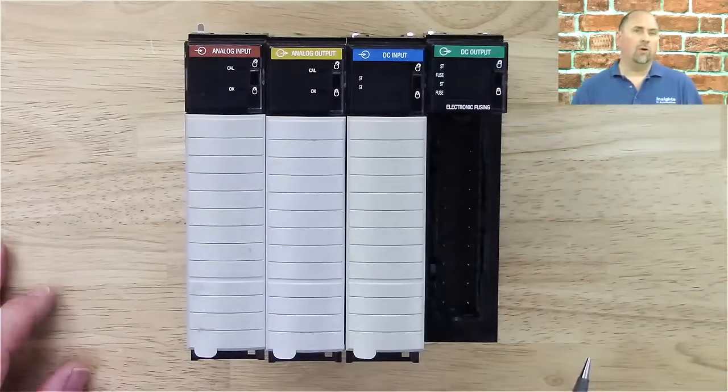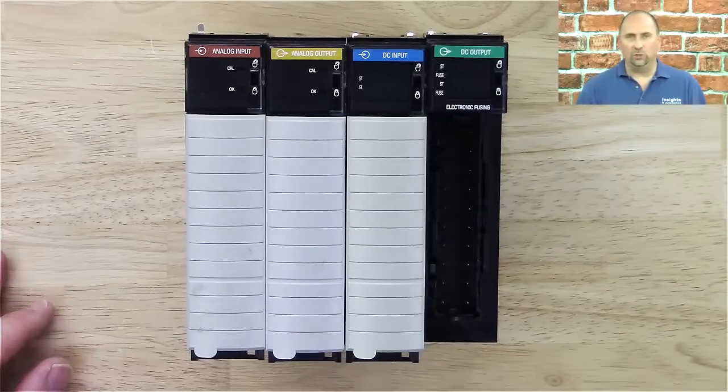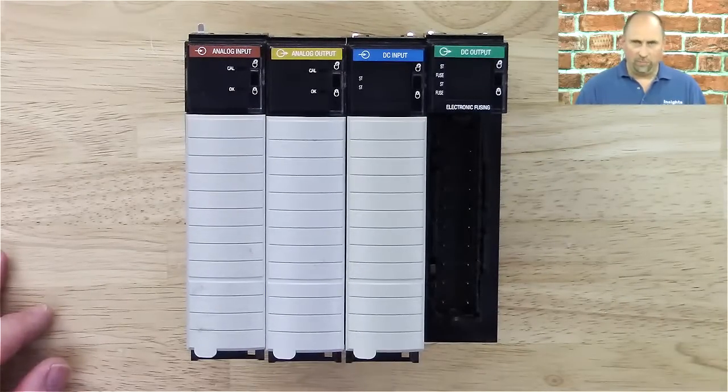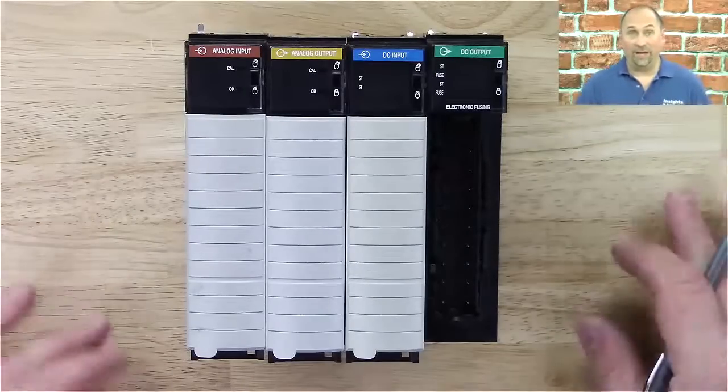The second thing you need to know about ControlLogix I.O. is they don't come with terminal blocks. So you get to choose, do you want spring clamp or do you want screw terminal? But whatever you choose, they don't come with it. You have to buy them separately.